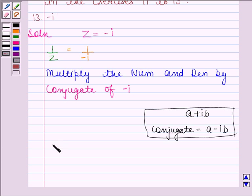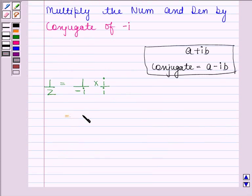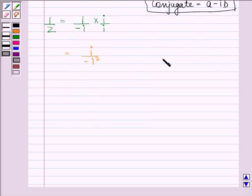Now 1 by Z is equal to 1 upon minus iota into iota upon iota. And this is equal to iota upon minus iota square. Now you know that iota square is equal to minus 1, so this is equal to iota upon minus into minus 1, which is plus iota.